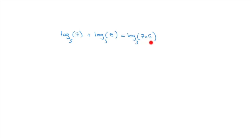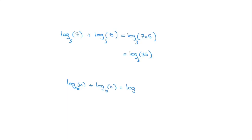Notice that what I'm doing here is multiplying the two numbers we had inside each of the two logarithms to begin with. And since 7 times 5 equals 35, this will equal log base 3 of 35. A more general way of writing this rule is as follows: the sum of log base b of some number a and log base b of some number c equals log base b of a times c.